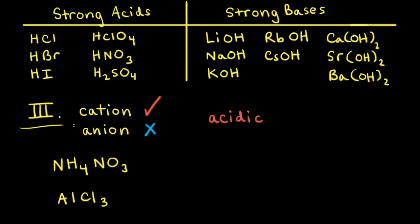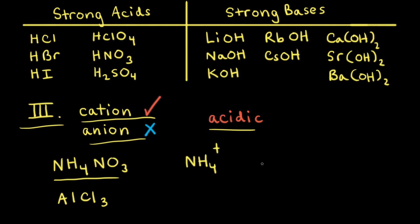The third possible combination of cation and anion is where the cation will react with water, but the anion will not. In this case, the resulting solution will be acidic. As an example, let's consider an aqueous solution of ammonium nitrate. Ammonium nitrate consists of the ammonium cation, NH4+, and the nitrate anion, NO3-. The nitrate anion is the conjugate base to nitric acid, HNO3. Since nitric acid is a strong acid, its conjugate base is of negligible basicity. So the nitrate anion does not affect the pH of the solution and does not react with water.